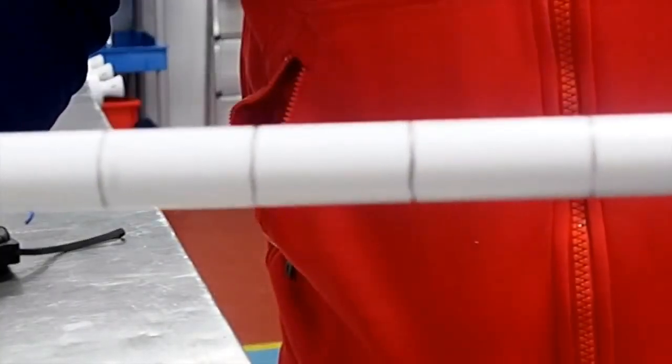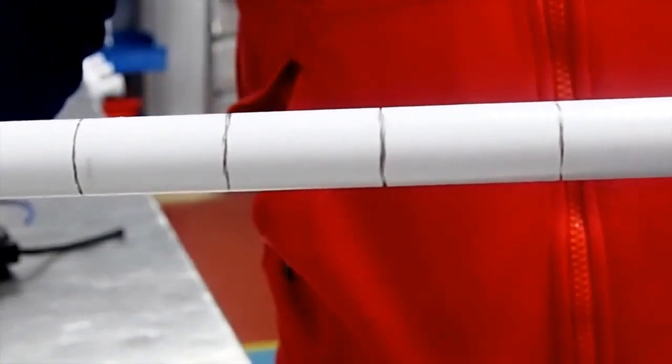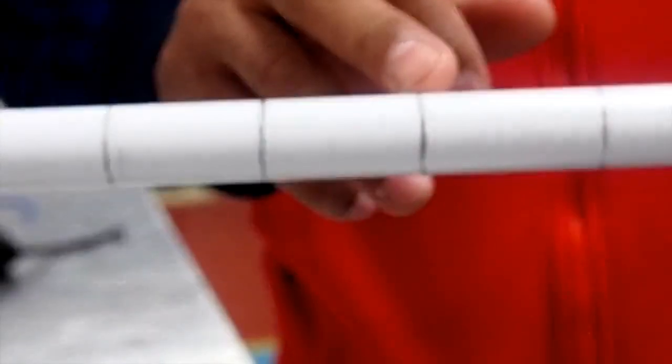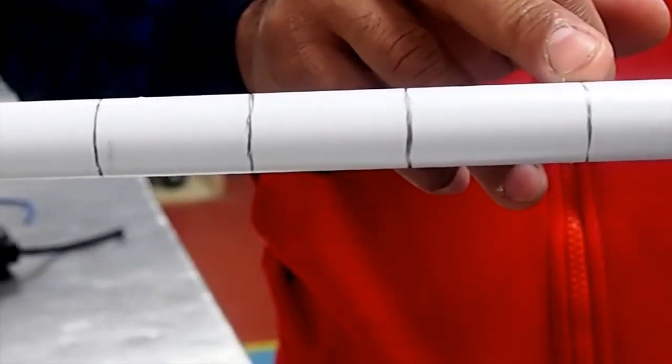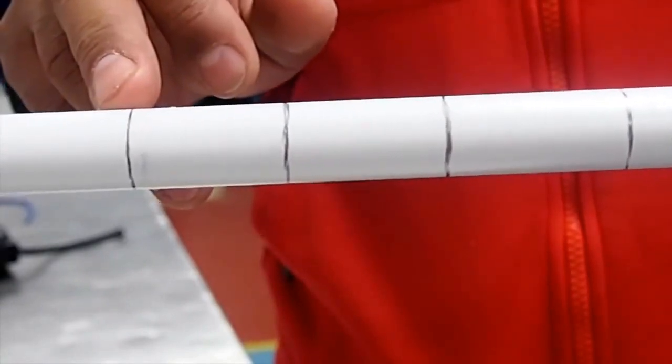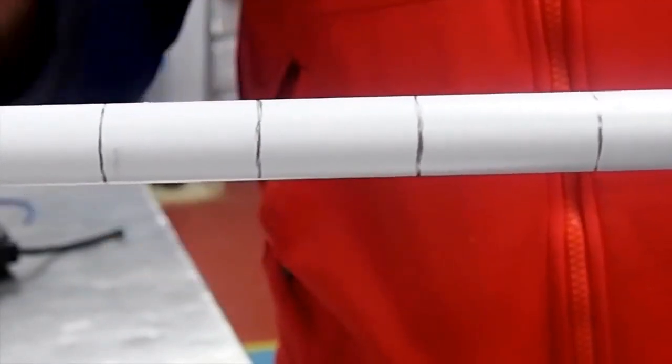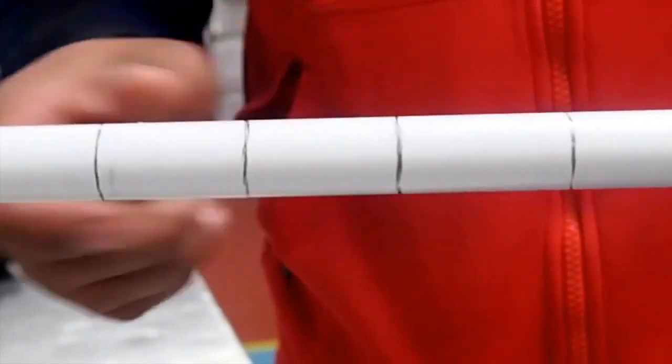As you can see, we now have our four marks: the original centre mark there, 40 millimetres behind it, 35 millimetres there and 35 millimetres there, a total of 70 millimetres. Now what we need to do is insert the bending spring.